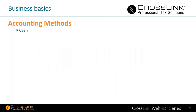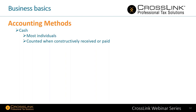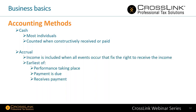Accounting methods to remember for business returns: first, cash basis — income and expenses are counted when constructively received or paid. Then accrual — income is included when all events occur that fix the right to receive income, such as performance taking place, payment being due, or payment being received. Some businesses will use a hybrid that includes elements of both, and it's your responsibility as a tax professional to work through that.